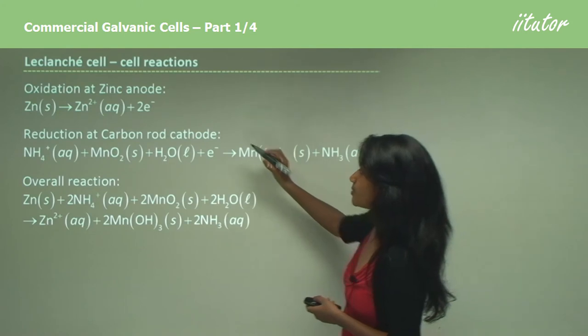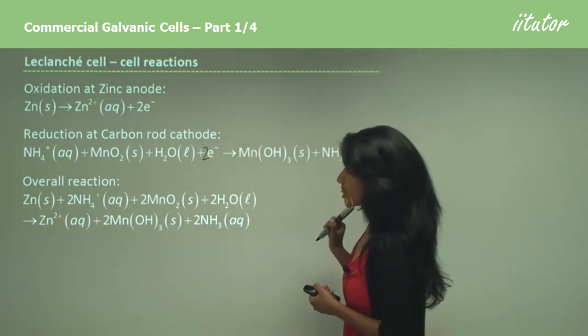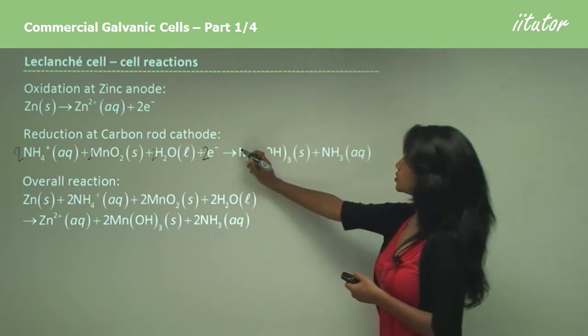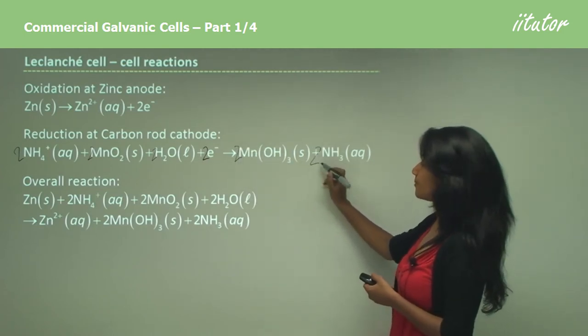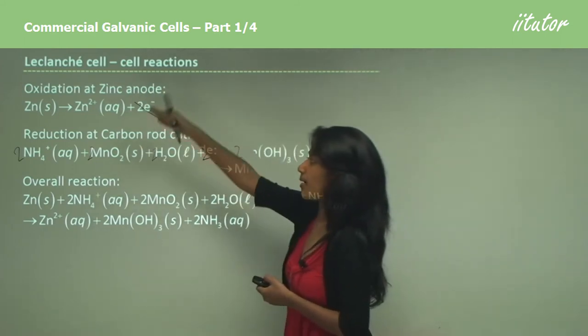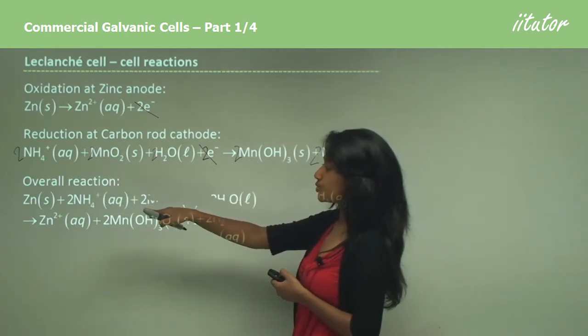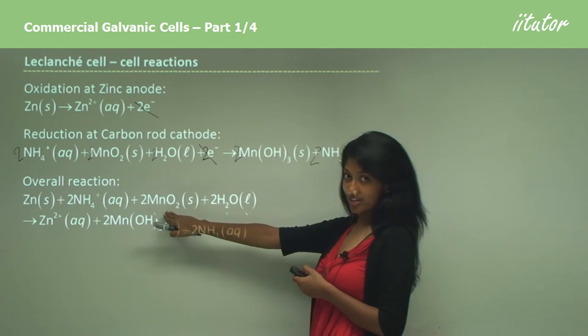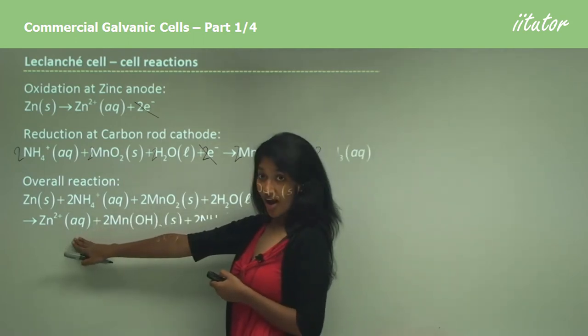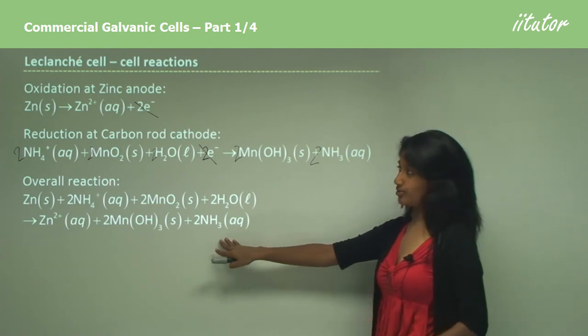So the overall reaction is when we have to balance it first. So we want two electrons here. That means we're going to add two for each of these. Two here and two here. So then we can cancel out the two electrons like this and we can add them up horizontally. So on this side of the reaction, we have zinc with two ammonium ions and two manganese dioxide molecules and two water molecules, giving off a zinc ion, two manganese hydroxide molecules, and two ammonia molecules, as you can see.